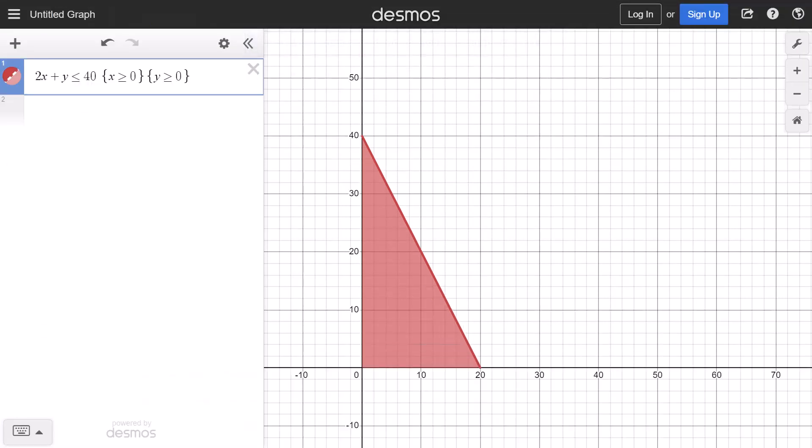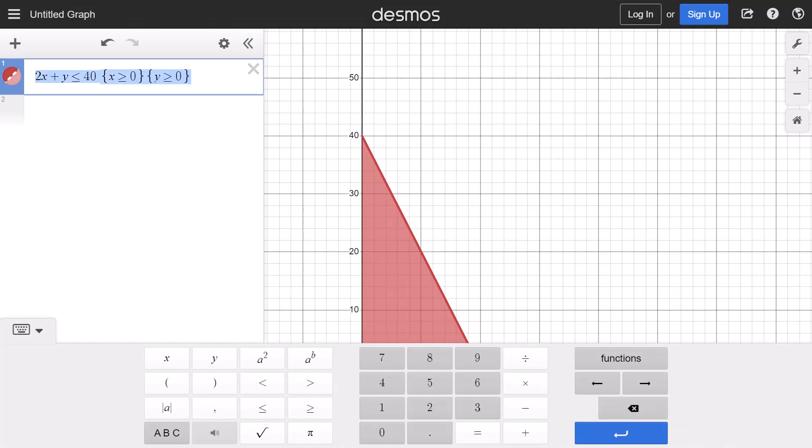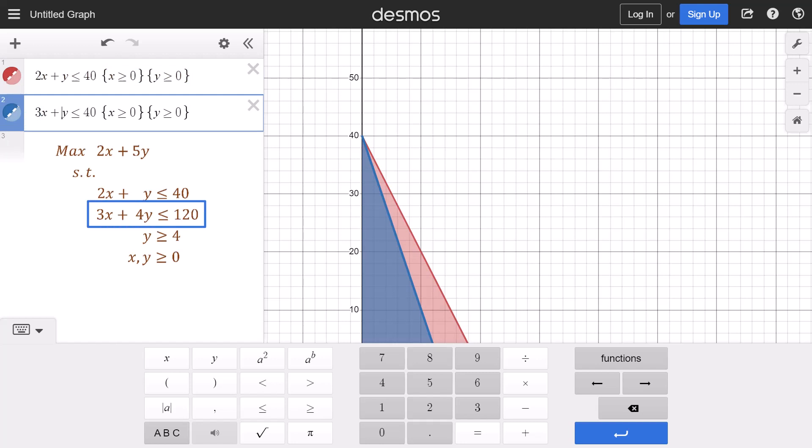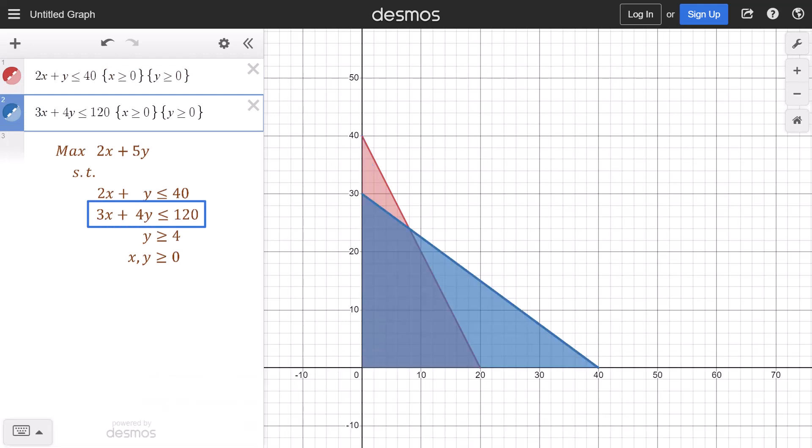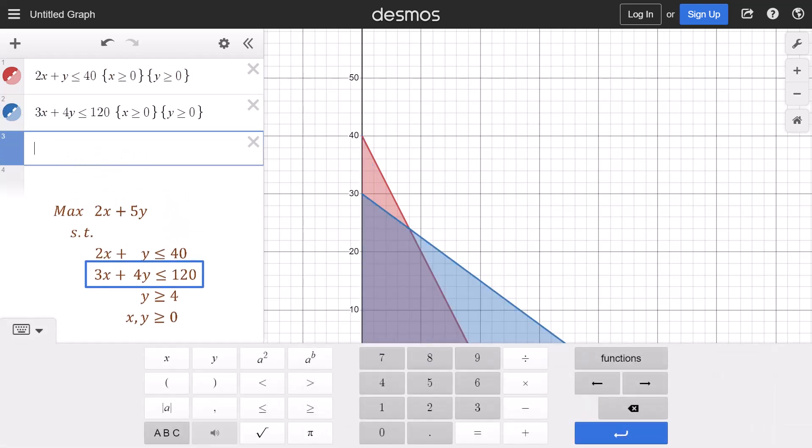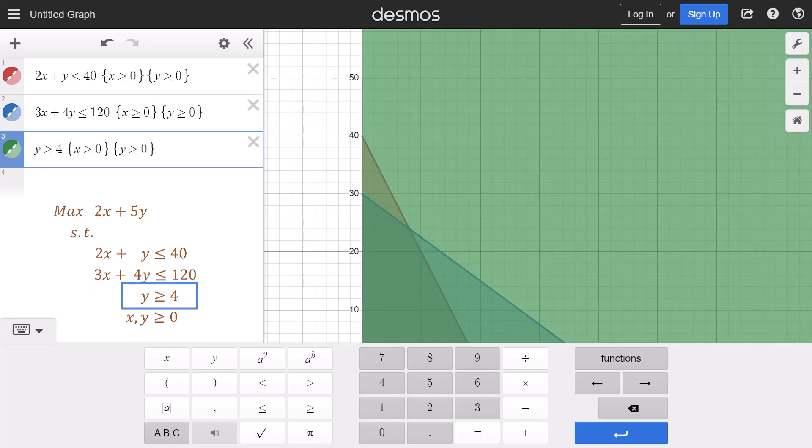Next, I'm going to copy the first constraint and paste it on the second line for the second constraint. That one is 3x plus 4y less than or equal to 120. I'm going to paste on line 3 for the third constraint as well. That one is y greater or equal to 4.